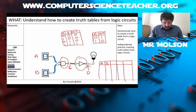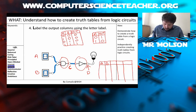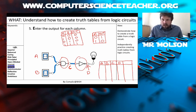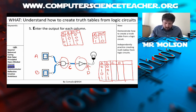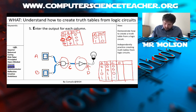L says to label the output columns using the letter labels, so we put C and D in those columns. Then we're on to E — enter the output for each column. Let's do the inputs first: all combinations of A and B — both off, one on and the other off, the other way around, and both on. Now putting that through the AND gate, referring to our table: both off gives off, one on and one off gives off, and both on gives on. There's my first output column done.